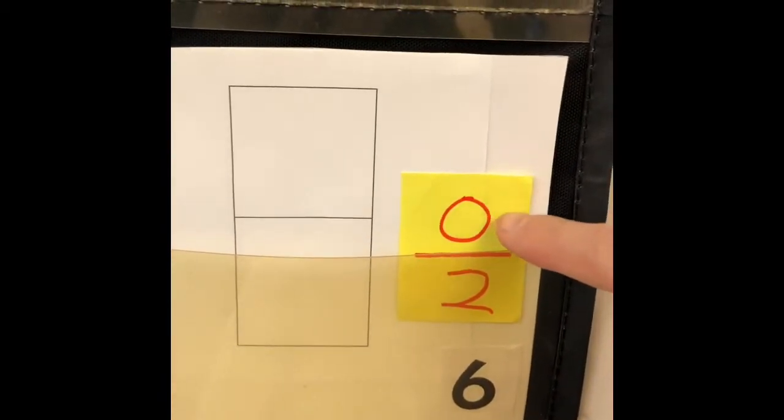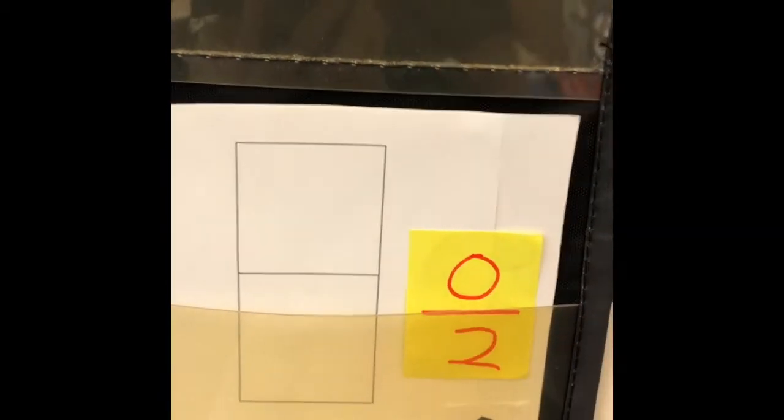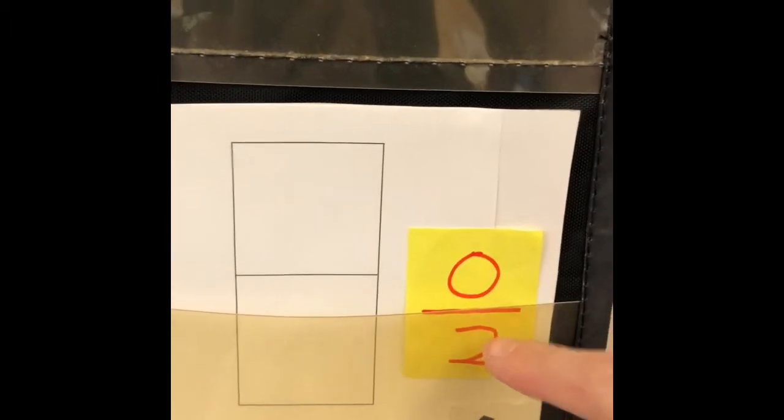If I write that as a fraction, we would say we have zero out of two pieces left. We would call that zero halves.